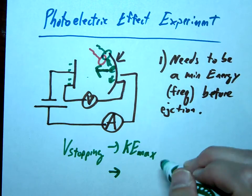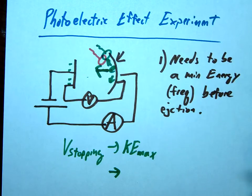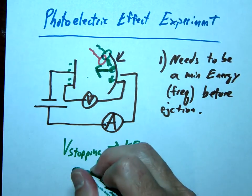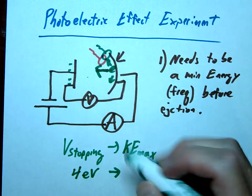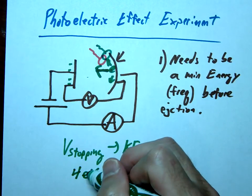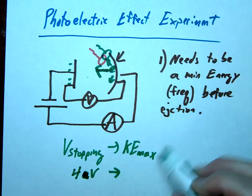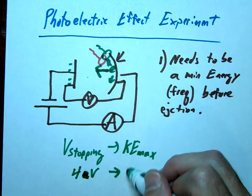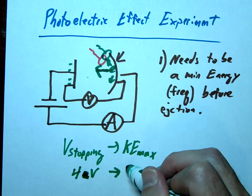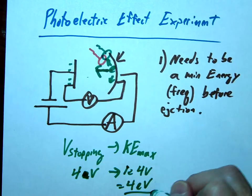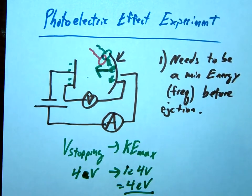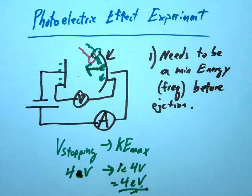Now let's just put this in energy terms. Remember energy, we use the units of joules or electron volts. Let's say for example we have a stopping voltage of 4 volts. What that would mean is that the kinetic energy of 1 electron would be 1 electron times 4 volts or 4 electron volts. So in other words, the max kinetic energy of the ejected electron would be equal to the stopping voltage in electron volts.